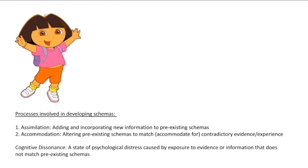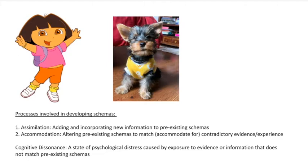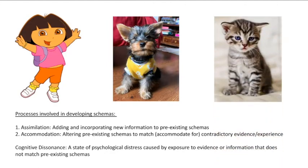Now imagine this little girl — Dora the Explorer. She's a very good example of an information processor because she's constantly exploring and trying to make sense of the world. She first sees a Yorkie and forms a schema that dogs are small, furry, four-legged creatures with a tail. Once this schema is established, she then sees a cat and says 'oh, doggy,' only to be corrected that not all small furry four-legged creatures with a tail are dogs. This whole process of distinguishing between the two is referred to as assimilation.